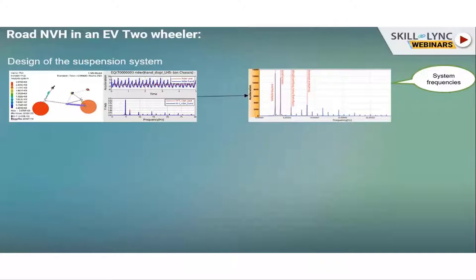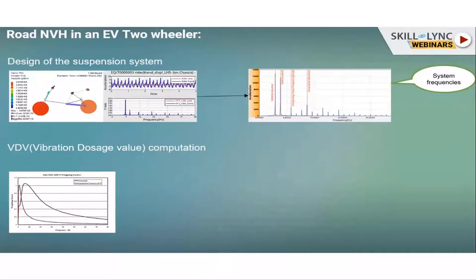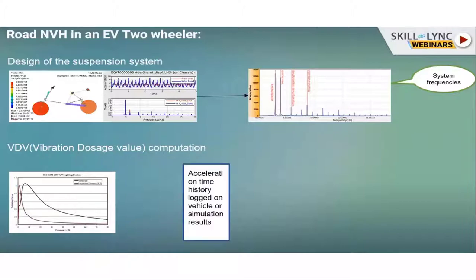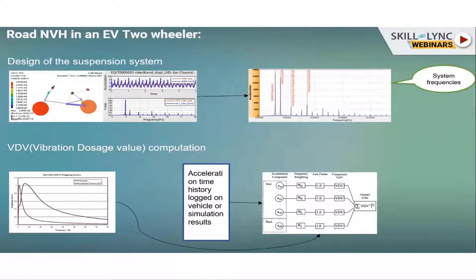I study these system frequencies and my aim is to reduce their effect — I cannot eliminate them because these are system characteristics. To objectify how much vibration there is, there is something called VDV, Vibration Dosage Value, and there is an ISO standard on this. Humans don't perceive every frequency as having the same impact. Depending on how we experience different frequencies, there are weighing functions available. I take acceleration time history logged on the vehicle or simulation results, send it to VDV computation — computed separately for the seat, hand, and back — then multiply by the weighing function.